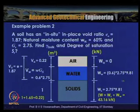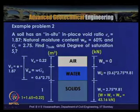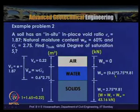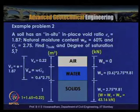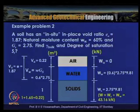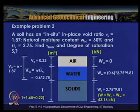Weight of water equals 0.6 × 2.75 × 9.81, and weight of air is 0. So total weight W = Ws + Ww = 43.16 kN. By dividing the weight of water by γw we get the volume of water: Vw = 0.6 × 2.75. Knowing the volume of voids, we can obtain the volume of air, which works out to be 0.22.